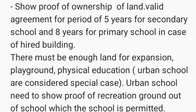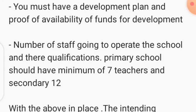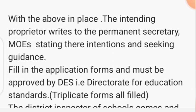There must be enough land for expansion, playground, and physical education. Urban schools are considered a special case, because usually in an urban area there's not enough space for expansion. Urban schools need to show proof of a recreation ground outside of school — an agreement that they have been given permission to use a certain pitch or area. There must also be a development plan and proof of viability of funds for development.